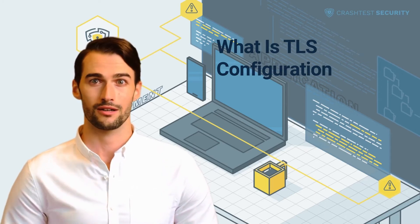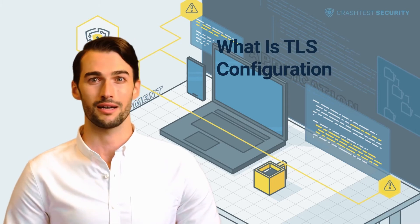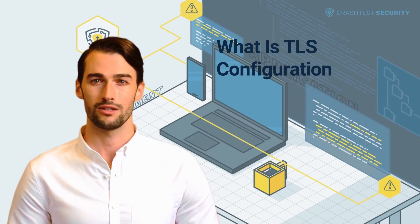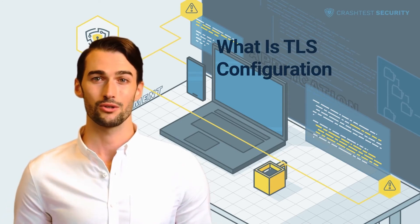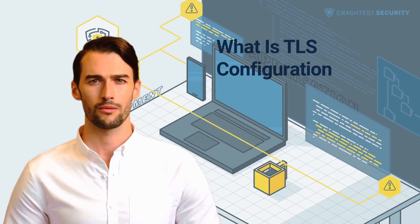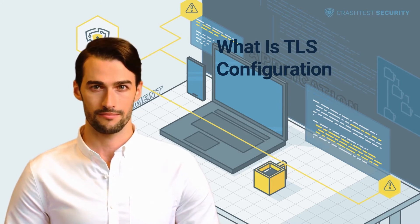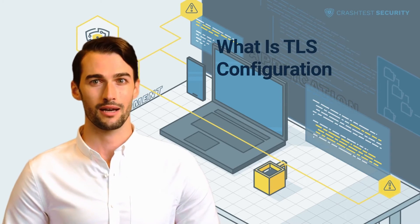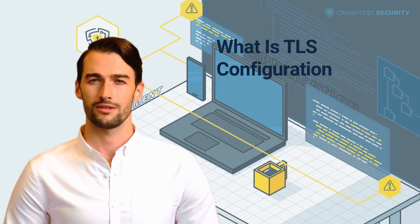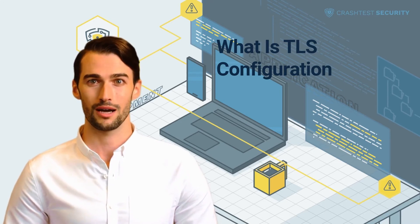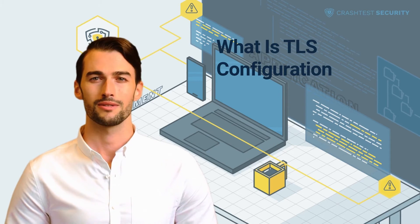A correctly configured TLS encryption ensures that users only get content from your web application. This means there is no unregulated tampering with the exchanged communication and users cannot eavesdrop through the transport layer security protocol. It is paramount to configure TLS correctly to ensure the real security of your systems. If this is not done, it may create a sense of security that is not backed in reality. One of the main aspects of TLS configuration is using suitable profiles. Internet organizations recommend profiles, and following them is a good practice.